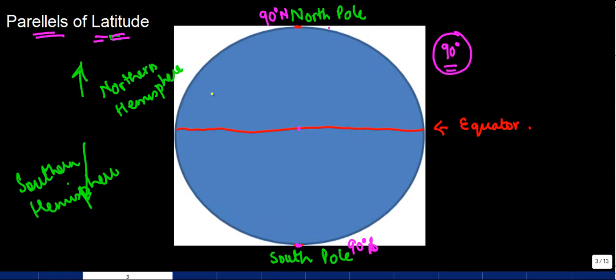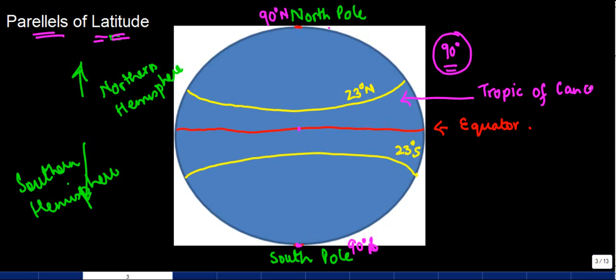Now, let me take you through the other important latitudes. You have something towards 23 degrees North, and similarly, you have something which is 23 degrees South. This 23 degree North latitude is known as Tropic of Cancer, and the one which is on the South is known as Tropic of Capricorn.